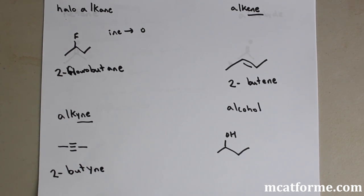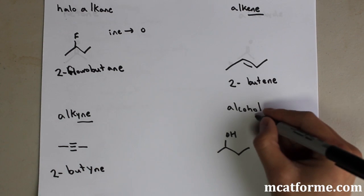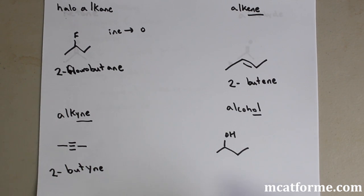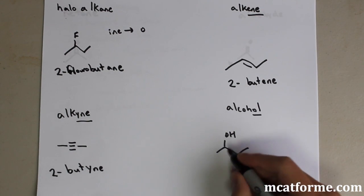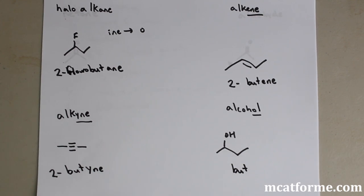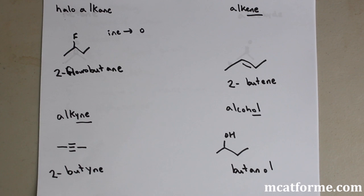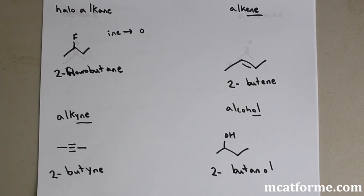Now we're looking at alcohols, which are pretty common on the MCAT. We can treat them similarly to haloalkanes — kind of like a substituent. Alcohols have the ending '-ol'. So we change the end of the name to '-ol'. With four carbons the prefix is 'but', giving us butan-, then we add '-ol': butanol. Similarly we'd get pentanol, heptanol, etc. We also have to name which carbon it comes off of — in this case carbon two, so 2-butanol.